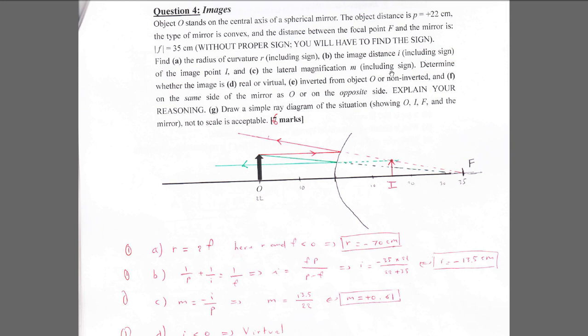For part C, lateral magnification m equals minus i divided by p. Plugging in the numbers — i is negative — you get a positive magnification of 0.61. This confirms the image is upright and smaller, roughly half the size of the object.